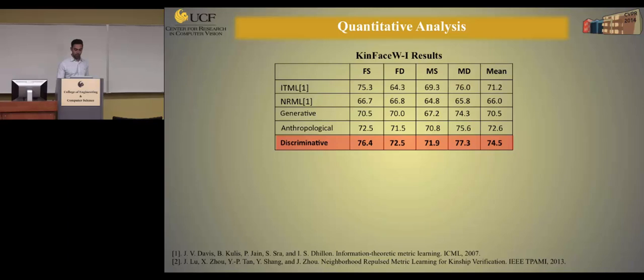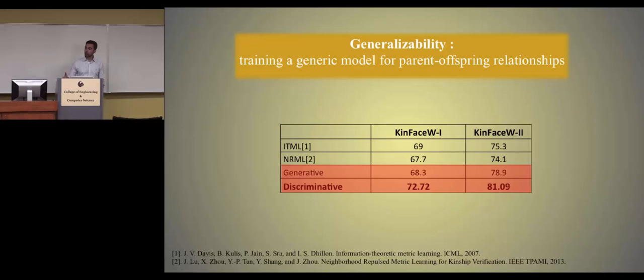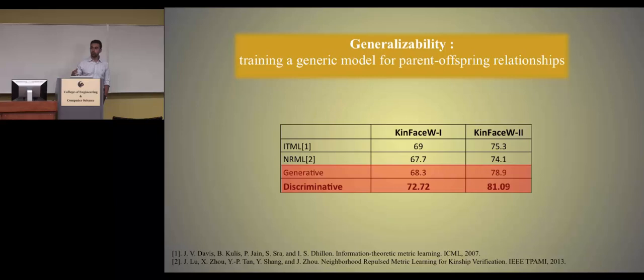On KinFaceW2, our discriminative layer also outperforms ITML and NRML by around 7%. In our last experiment, we trained one single network for all relationships combined rather than separate classifiers per relationship. We did the same for ITML and NRML. Again, our discriminative model outperforms other methods by a significant margin.